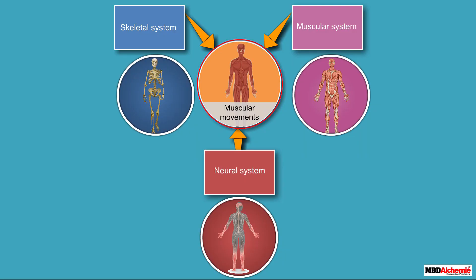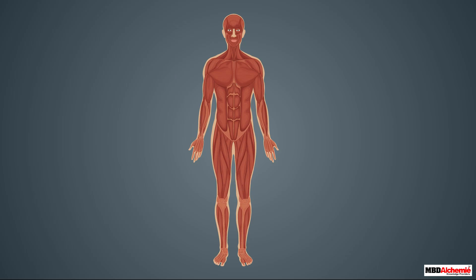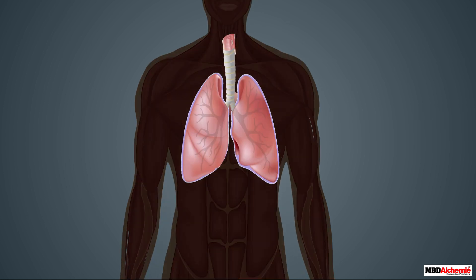Muscular movements require a perfect coordination of muscular, skeletal, and neural systems. Besides muscular movements, there are other types of movements occurring inside the human body.